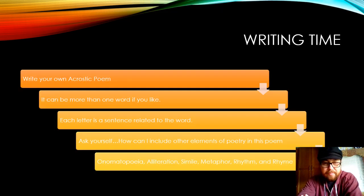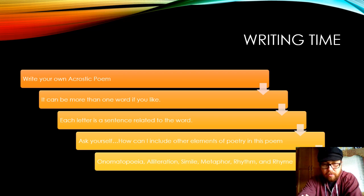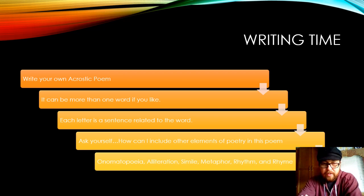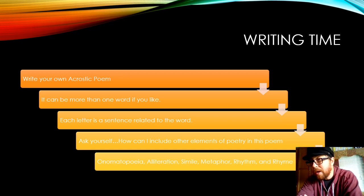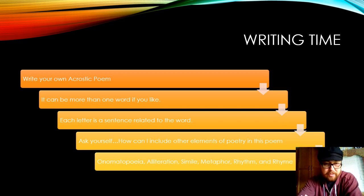So it's writing time. I know this was a shorter lesson but this one's pretty straight and to the point. You're going to write your own acrostic poem. It can be more than one word if you like. I think they're better if you write it like a poem with all the good stuff that we've learned up to this point. Each letter is a sentence related to the word.